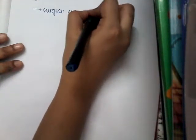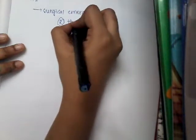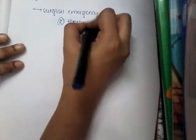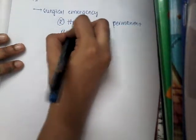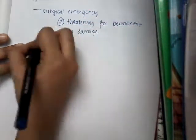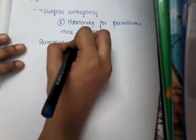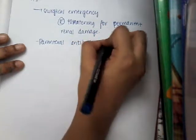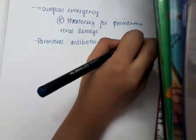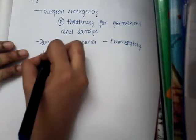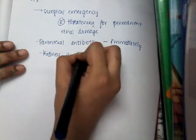If you do the treatment, pyonephrosis is a surgical emergency. Why? Because there is a threat of permanent renal damage. So because this is an emergency, parenteral antibiotics are given immediately. And then the kidney is drained. But the pus may be too thick.